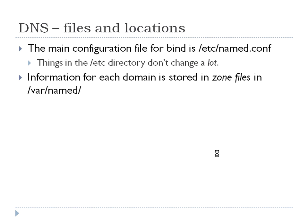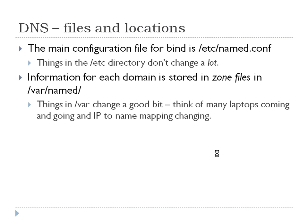The zone information that has your records about which hosts are in your domain will change a good bit, especially if it's dynamic. Those are stored in '/var/named'. '/var' has stuff that changes a good bit — for example, think if you had lots of laptops and you were doing dynamic DNS, and people were coming and going. So '/var' is used because it would change quite a bit.